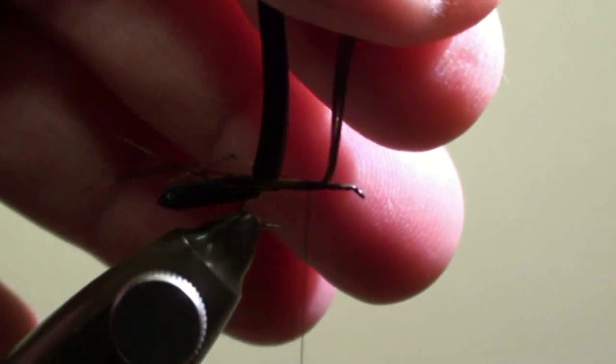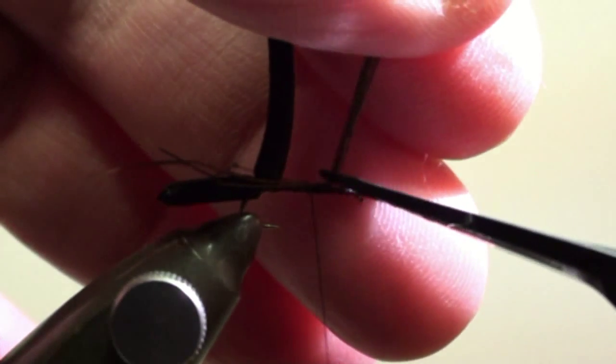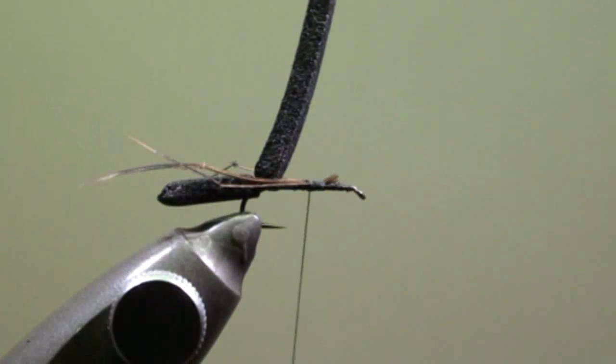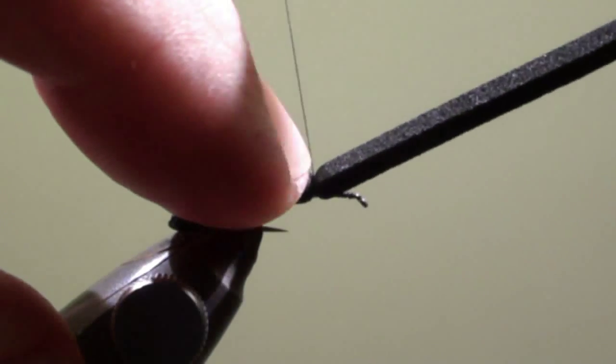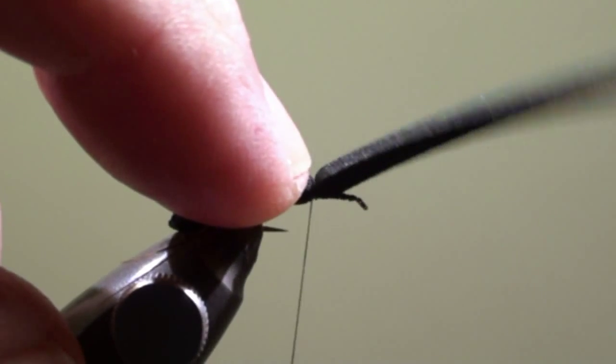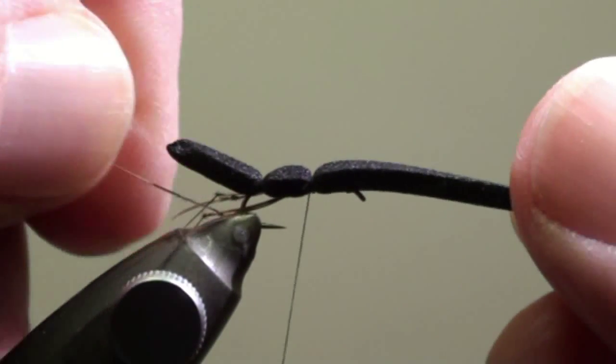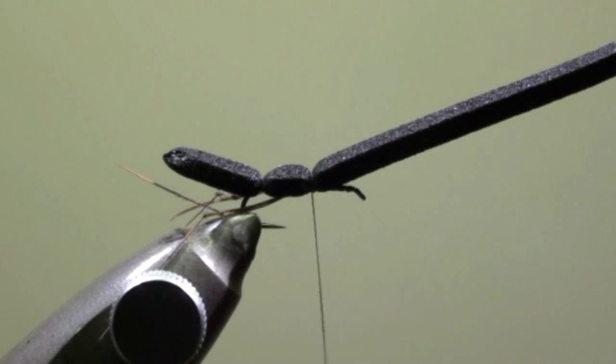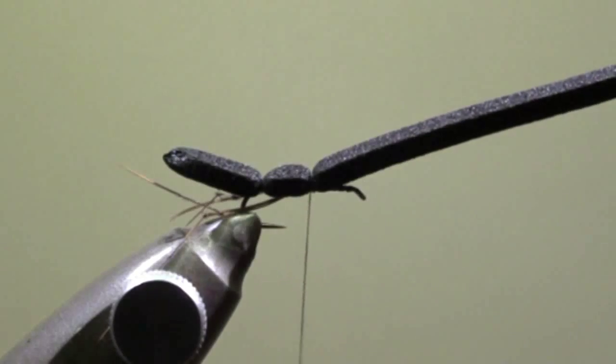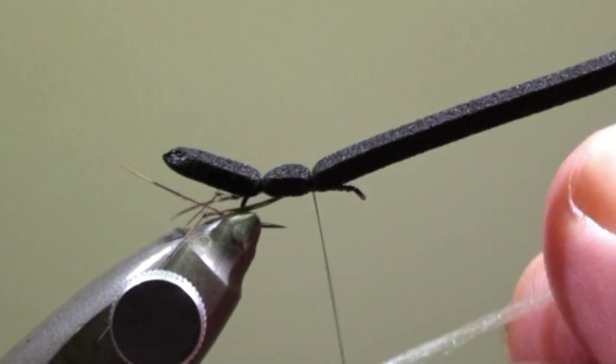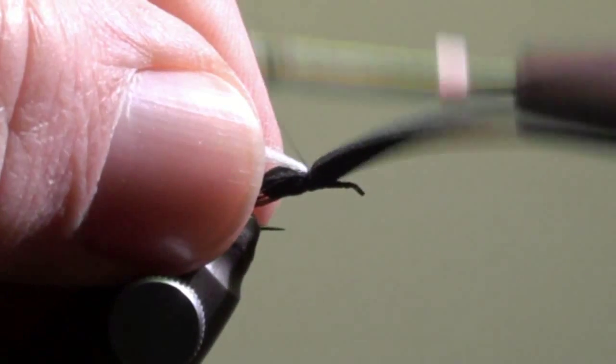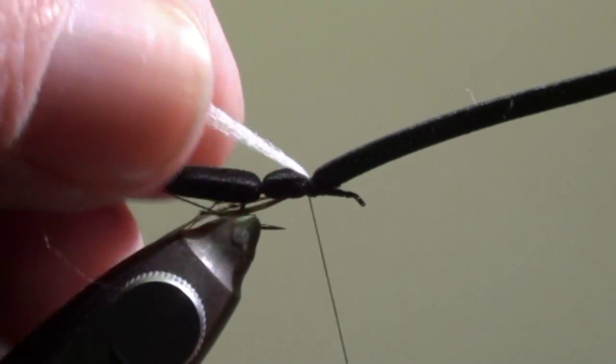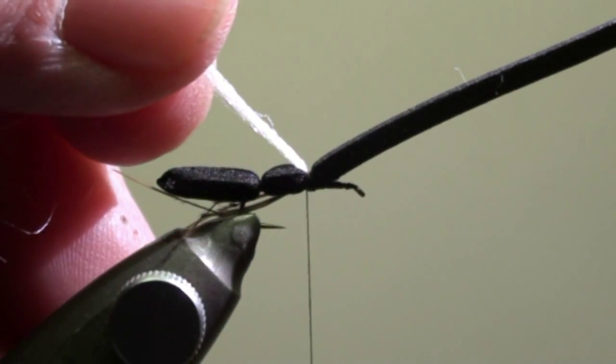Cut off the excess of the pheasant tail fibers, flip the foam strip forwards and tie it in in the middle of the hook shank. We will tie in at this point the wing which consists of a glow yarn strip that we will bring from the back side around our tying thread, fold it and tie it in on top of the hook shank. When it is secured in its position we will trim it to create a short wing.